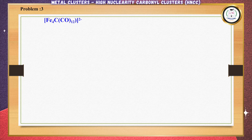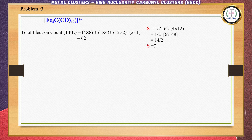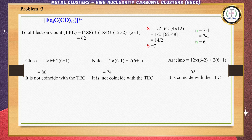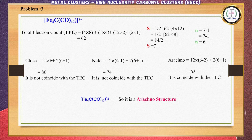Next problem: [Fe4C(CO)12]²⁻. Step one: iron has 8 valence electrons with 4 metal atoms, carbon contributes 4 electrons, each carbonyl contributes 2 electrons, and there are 2 negative charges. The total electron count is 62. Calculating S gives S = 7, and N = 6. Substituting N = 6 into the formulas: Closo gives 86, Nido gives 74, and Arachno gives 62. Comparing, it coincides with Arachno, so [Fe4C(CO)12]²⁻ confirms the Arachno structure.